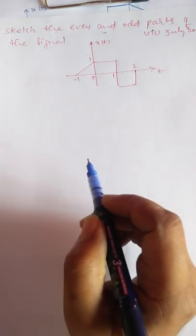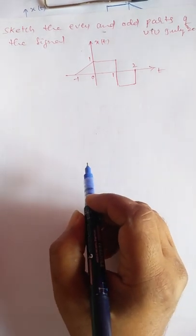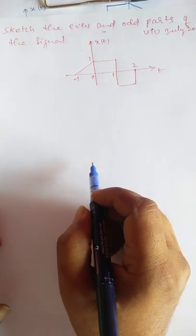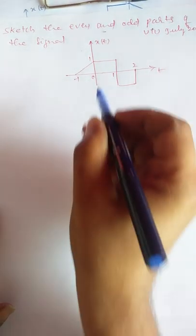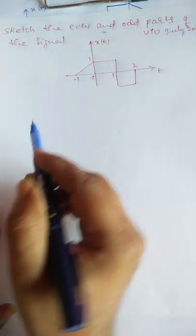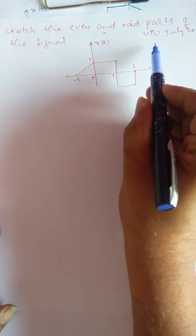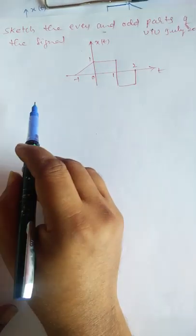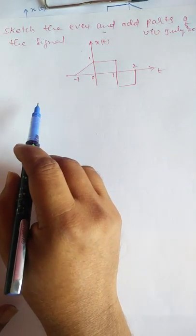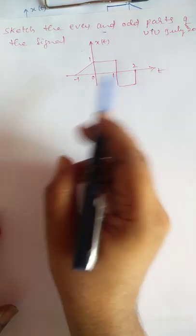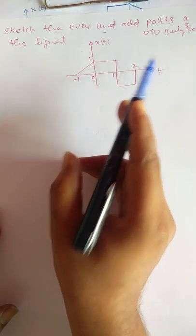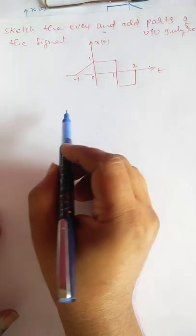One problem on finding even and odd parts of a continuous time signal. This question is from the university exam paper in July 2016.